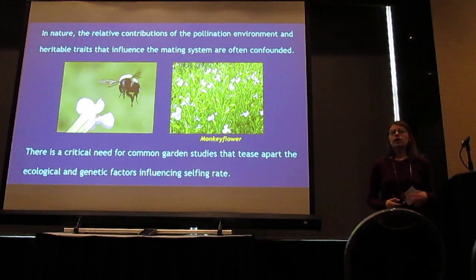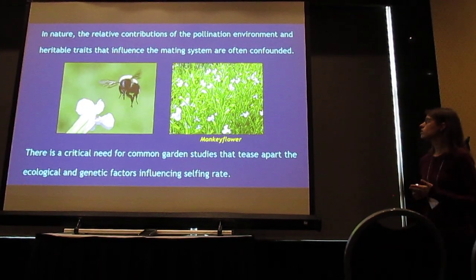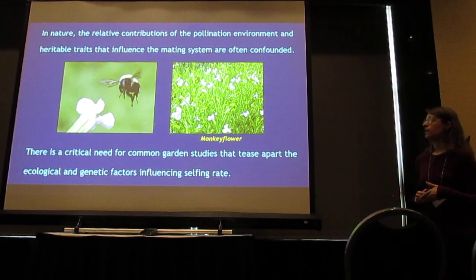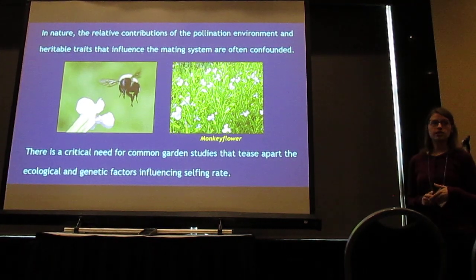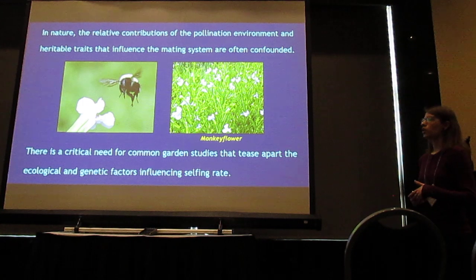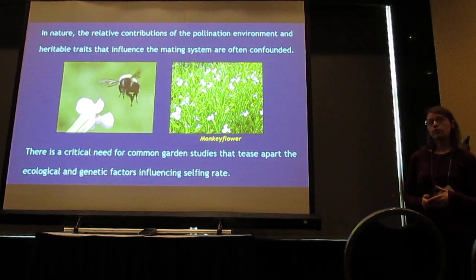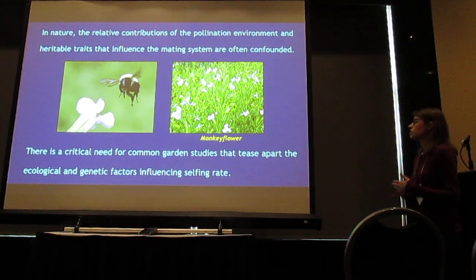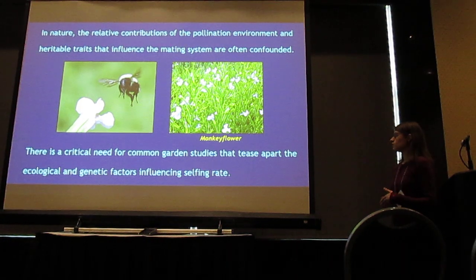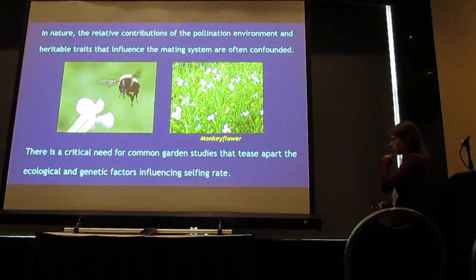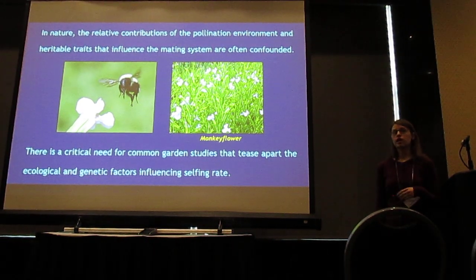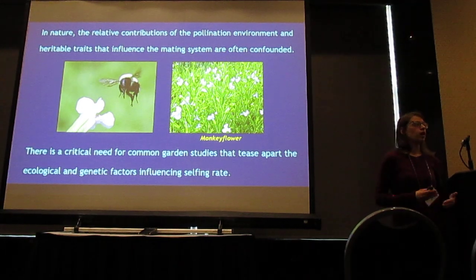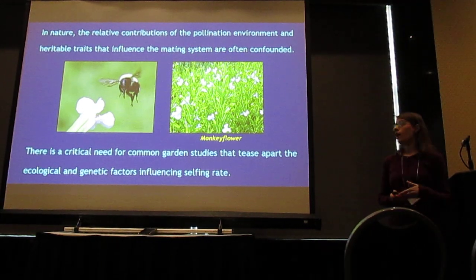In nature, the relative contributions of the pollination environment and heritable traits that influence the mating system are often confounded. As a result, there is a critical need for common garden studies that tease apart the ecological and genetic factors that influence the proportion of selfing and outcrossing.